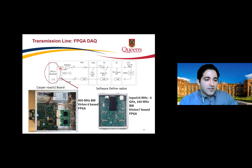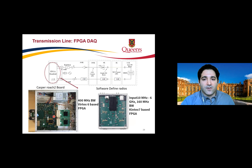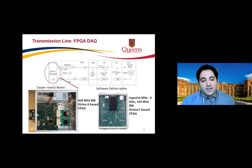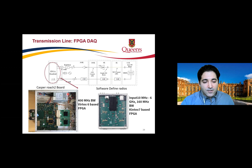For the readout system, people typically use ROACH2 boards. These were developed alongside MKIDs from the beginning. However, they become expensive for large arrays — my 10,000-pixel design spanning 4–8 GHz with 2,000 pixels per 4-GHz band would require 10 ROACH2 boards, making the electronic readout cost on the order of $100,000. This motivated the use of software-defined radios (SDR) as an alternative solution.